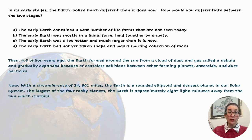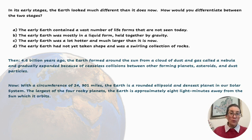In its early stages, the Earth looked much different than it does now. How would you differentiate between the two stages? Let's look at then and now. 4.6 billion years ago, the Earth formed around the Sun from a cloud of dust and gas called a nebula, and gradually expanded because of ceaseless collisions between other forming planets, asteroids, and dust particles.